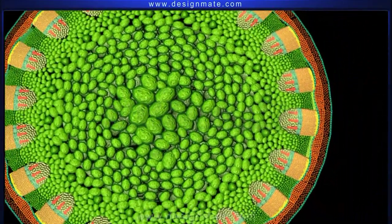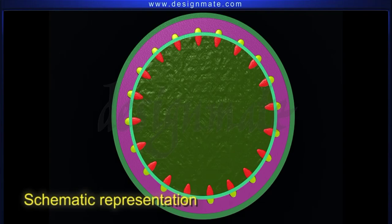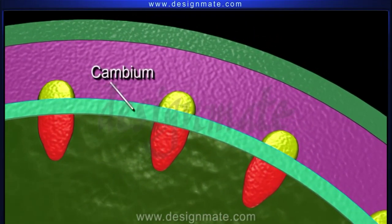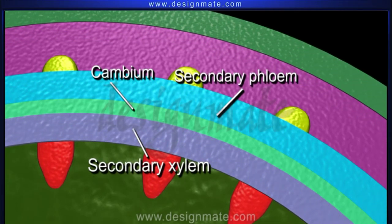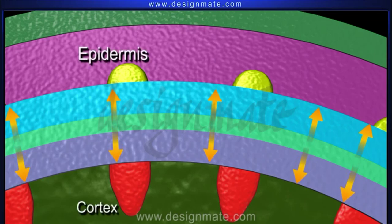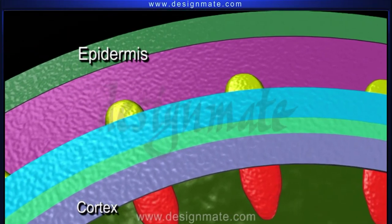Let us now look at the simplified view of this stem section with the cambial ring. As the plant matures, the cambium gives rise to the secondary phloem and secondary xylem elements on the outer side and inner side respectively. The newly formed cells exert pressure on the cortex and the epidermis.